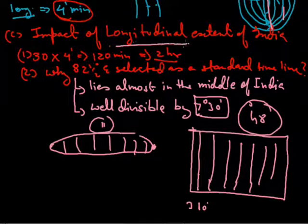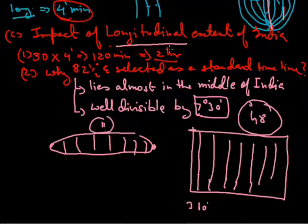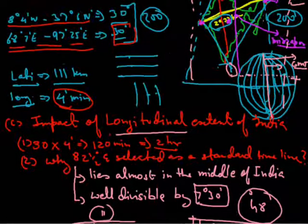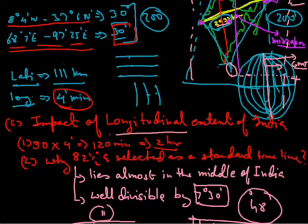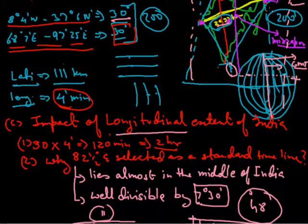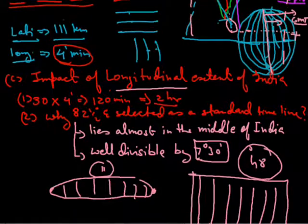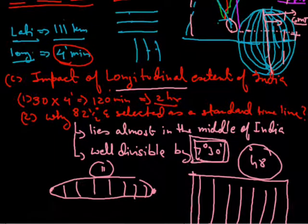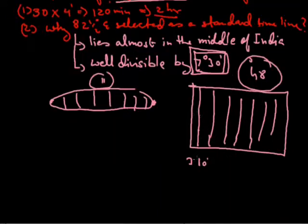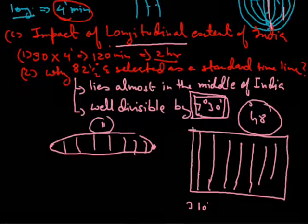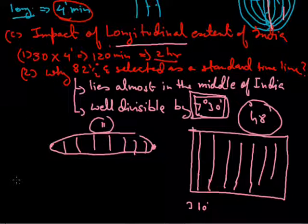So the longitudinal impact is clear. The first impact is that India's east-west distance is less than 3,000 km even though it spans 30 degrees. The second impact concerns time — this is why we select 82 and a half degrees as India's standard time zone.